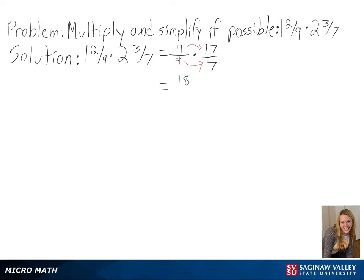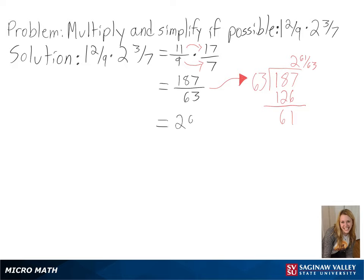After multiplying, we get 187 over 63. We can then use long division to convert back into a mixed number and get 2 and 61 over 63 as our final answer.